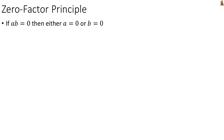Let's take a second and unpack that to see what it really means. Saying ab equals 0 means that we have two things, a and b, whose product — when you multiply them — is 0. What the zero factor principle says is that the only way that can happen is if one of the original things you were multiplying is equal to 0. In other words, if you take two things that are not 0 and multiply them together, you can never get 0 as the result.